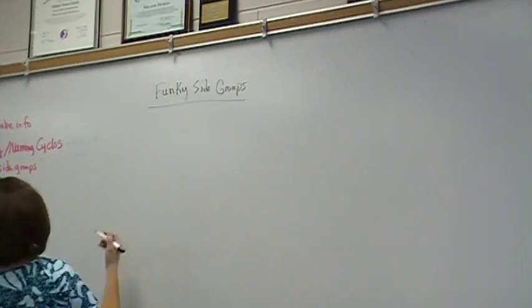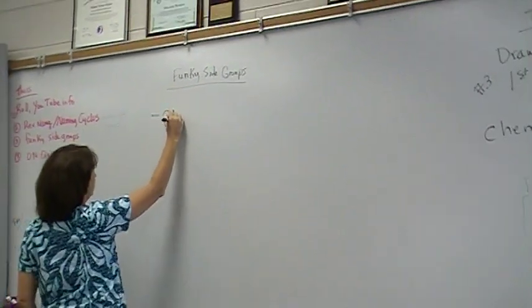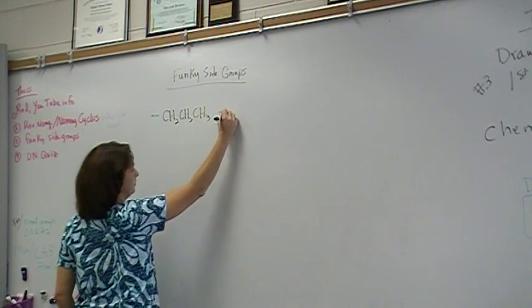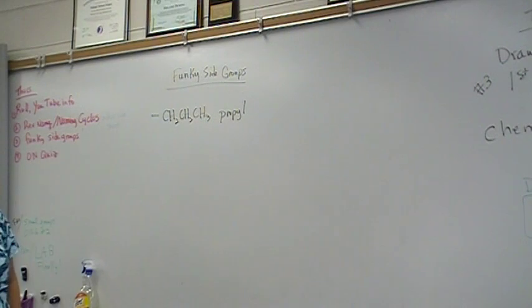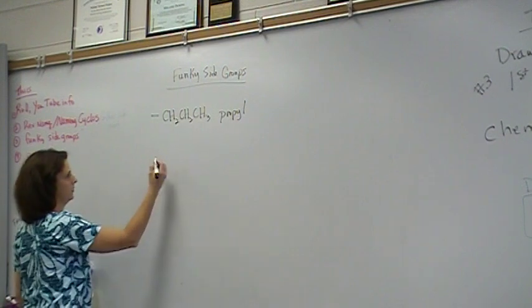Remember yesterday when I gave you some side groups, methyl, ethyl, propyl. What I didn't tell you is there's more than one way to write a propyl group, C3H7. Here's the other way.